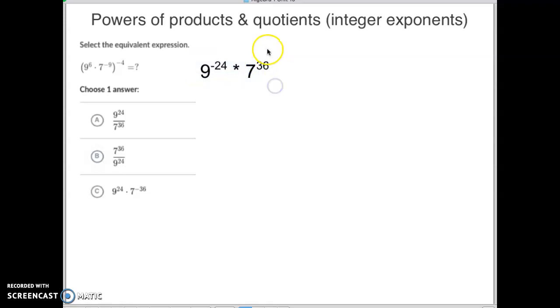Well one way we could do this is we could take this number, and we could move it from being on the top to moving it to the bottom. Just remember what happens to an exponent when you move it from the top to the bottom. It becomes the opposite of what it is. So if we do this, we keep the nine to the negative 24th on the top, and then the seven becomes a negative 36 on the bottom.